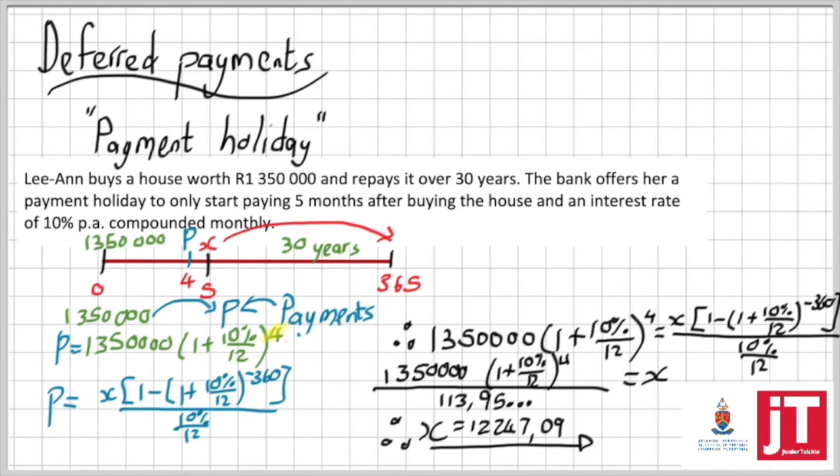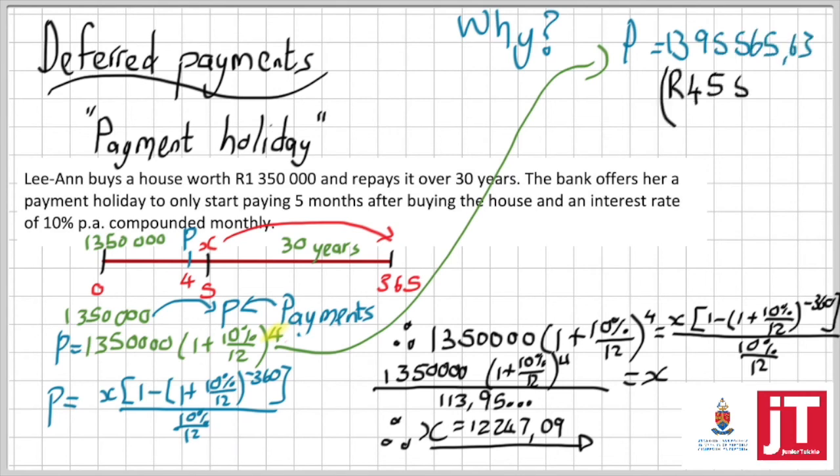But let us think about it. Let's slow down and think about what happened. That 1.35 million, if I inflate it for four months, I actually owe the bank an extra 45,000 rand worth of interest. And the scary thing is that, because it is now part of my annuity, it actually becomes more interest.